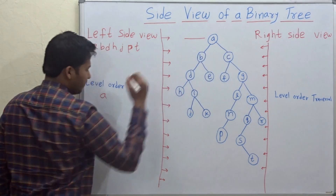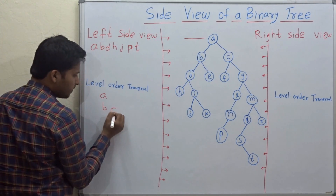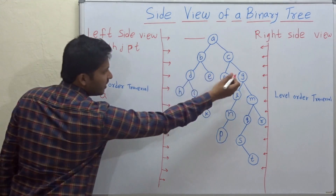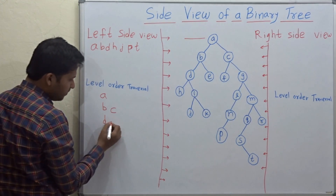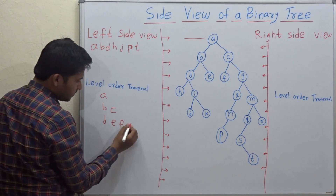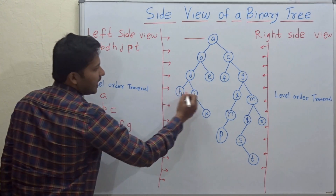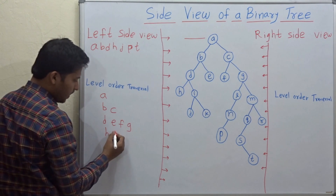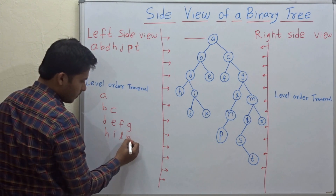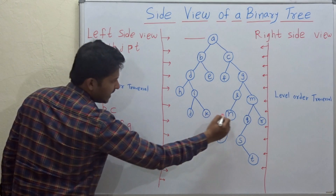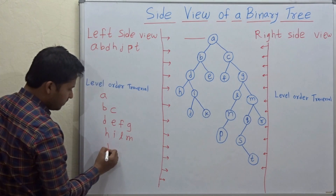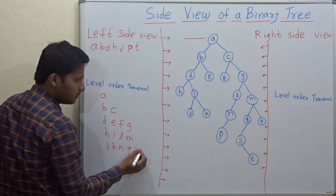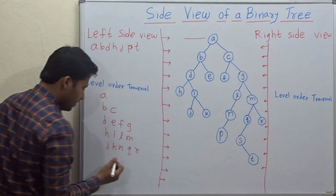The second level is B, C. I am writing level by level. Then the third level is D, E, F, G. Then H, I, L, M. Then J, K, N, Q, R. Then P, S, and T.